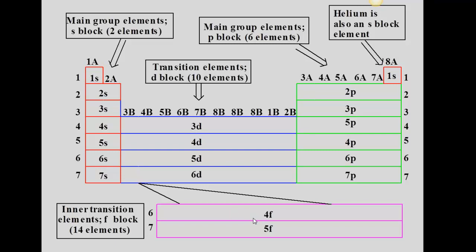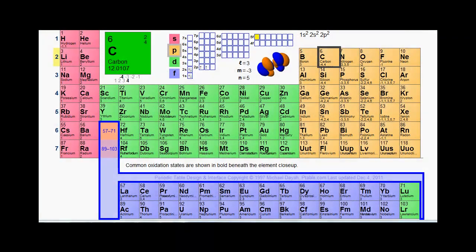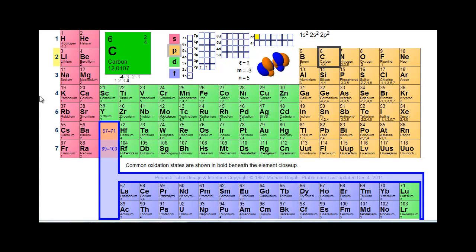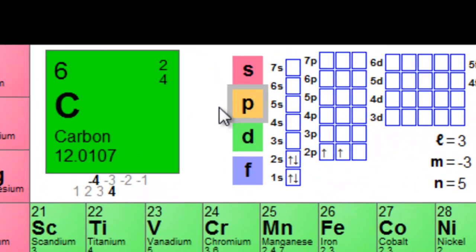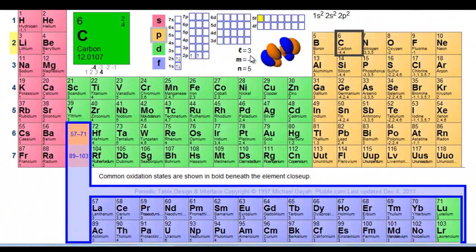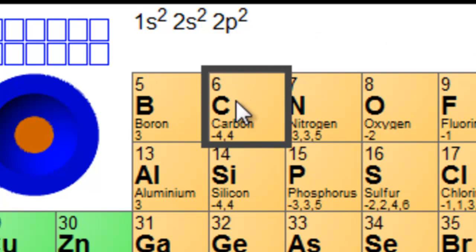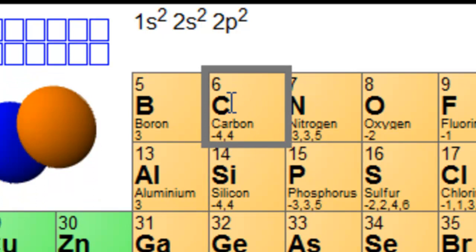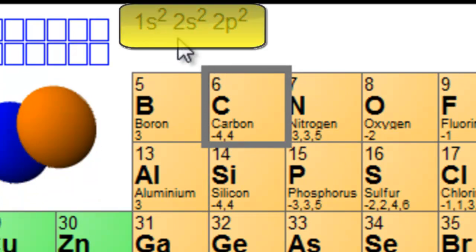Next I'll show you how to use the periodic table to write an electron configuration — it's sort of like playing a board game. I'm going to use this periodic table to make the connection between electron configurations and the periodic table. At the top is a key to remind you of these regions. I'm going to click on carbon, and right above carbon you'll see the electron configuration.